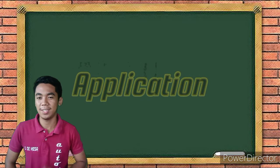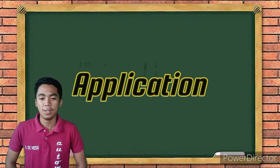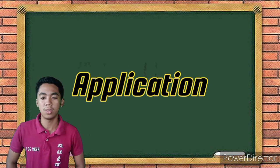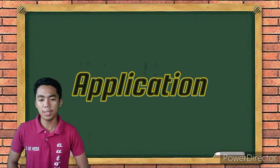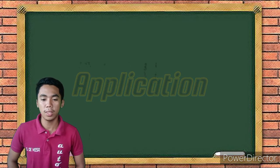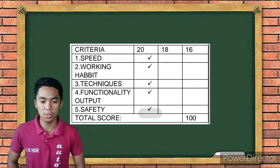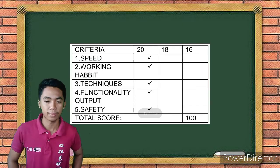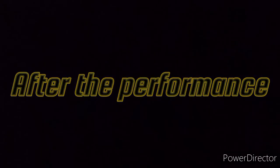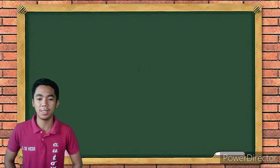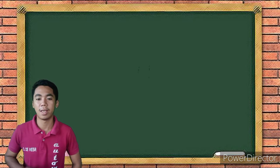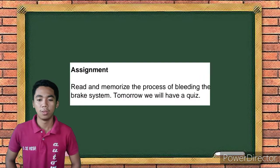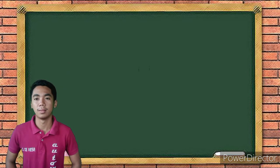Now let's move to the application. In our actual performance, I will group you, class. Since you are 20 in this major, I will group you into 10 so that each group will have at least 2 members. Is that clear? Yes sir. Each group will perform the process of bleeding the brake system. The performance will be graded using the criterion that is posted. Okay class, job well done. Most of you got a high grade, which means you clearly understood our topic for today. Here is your assignment: read and memorize the process of bleeding the brake system. Tomorrow we will have a quiz.